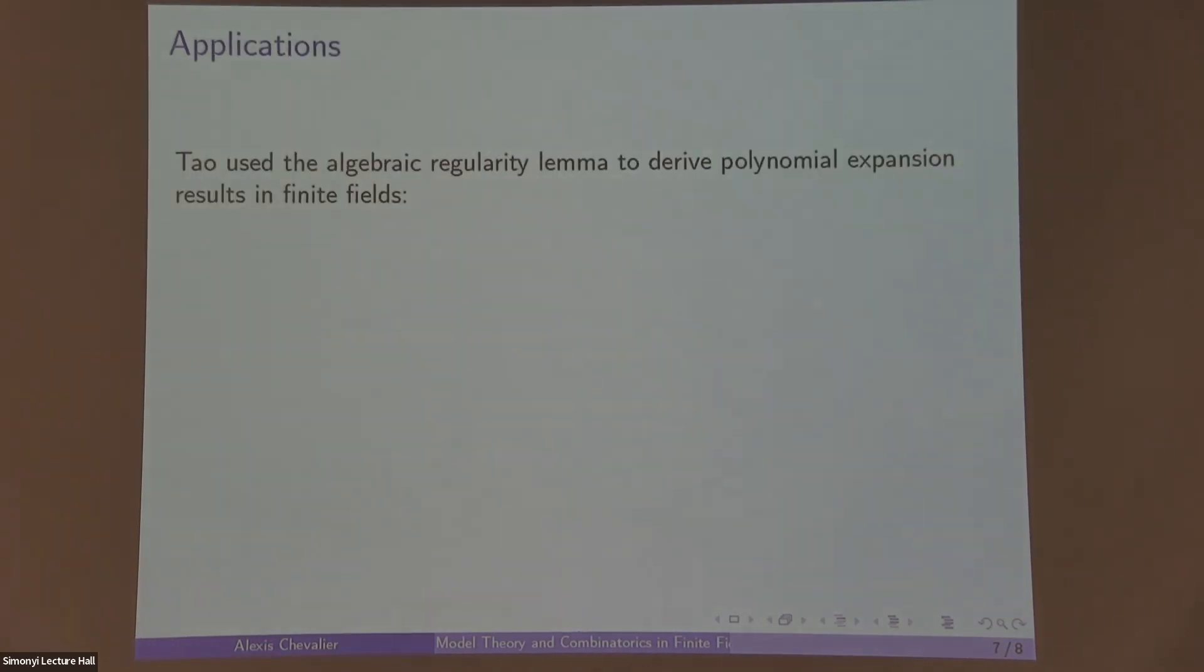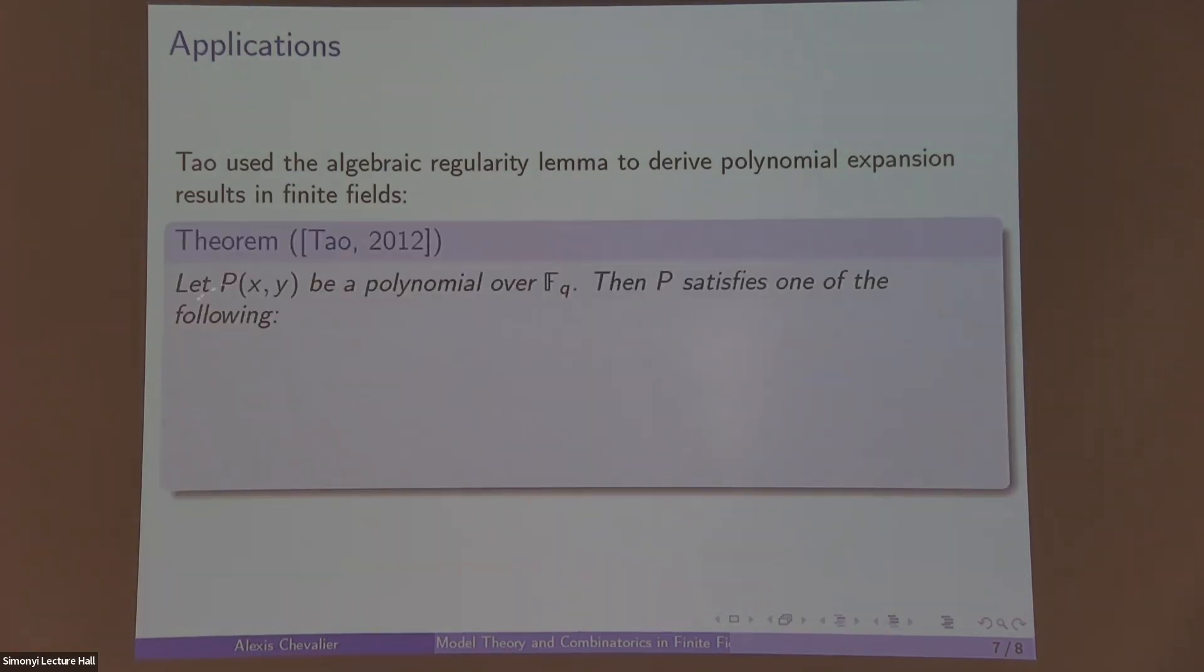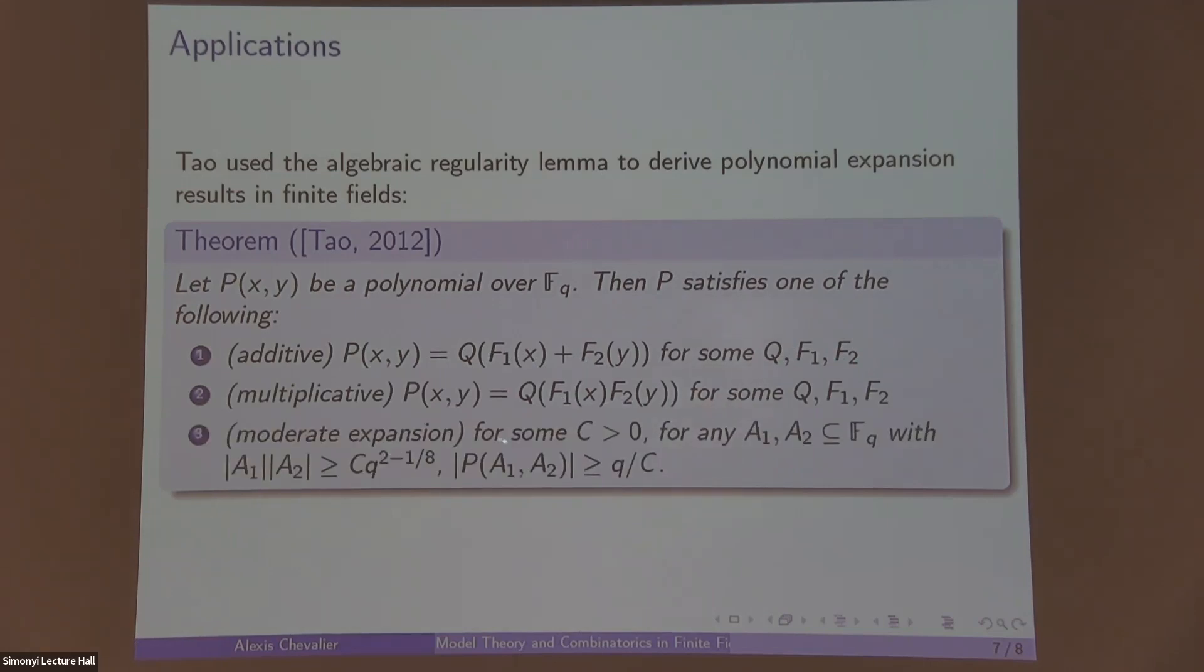Let's mention an application. So Tao in the same paper used the algebraic regularity lemma to derive polynomial expansion results in finite fields. Okay, so now let p(x,y) be a polynomial over F_q. Then p satisfies one of the following: either p has additive structure, which means p(x,y) = q(f_1(x) + f_2(y)) for some polynomials q, f_1, f_2, or p is multiplicative, p(x,y) = q(f_1(x) · f_2(y)), or p has a moderate expansion property.